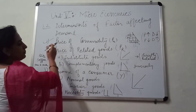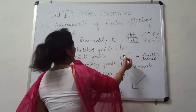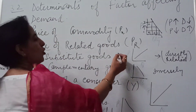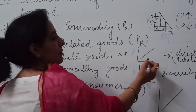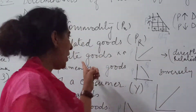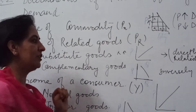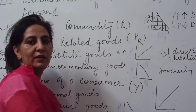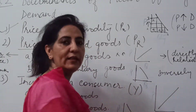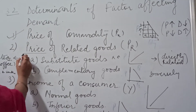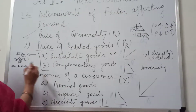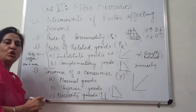Now we will study the relationship of related goods with price. Substitute goods are directly related — if the price of product X goes up, the quantity demanded of Y will also go up. So both are directly related. Whereas in complementary goods, if the price of one goes up, the quantity demanded for the other will go down — that is why it is inversely related. Under price of related goods, you will explain substitute as well as complementary goods.